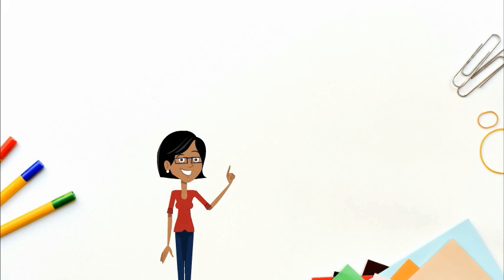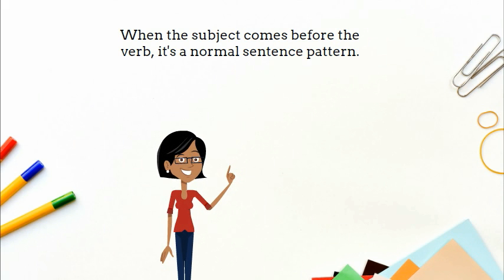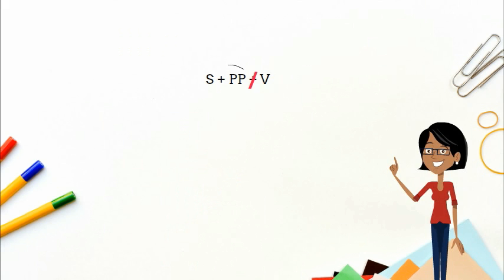Now, if you have a sentence pattern where the subject comes before the verb, remember that this is a normal sentence pattern. So, if you have subject plus prepositional phrase plus verb, you still look for the simple predicate to divide the sentence in half.